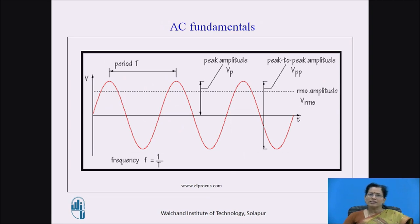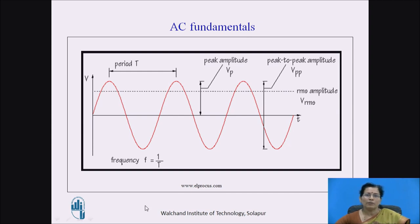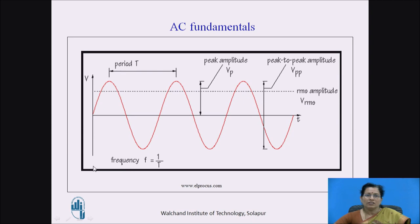Let us see about the terms related to AC fundamentals in short. Capital T is the time period — the time required to complete one cycle. In this diagram, Vp is the peak amplitude or peak value, also called the maximum value or amplitude of the cycle, indicated by Vp or Vm. Vpp is the peak-to-peak value. Frequency f equals 1 divided by T, and is the number of cycles completed in one second, measured in hertz.